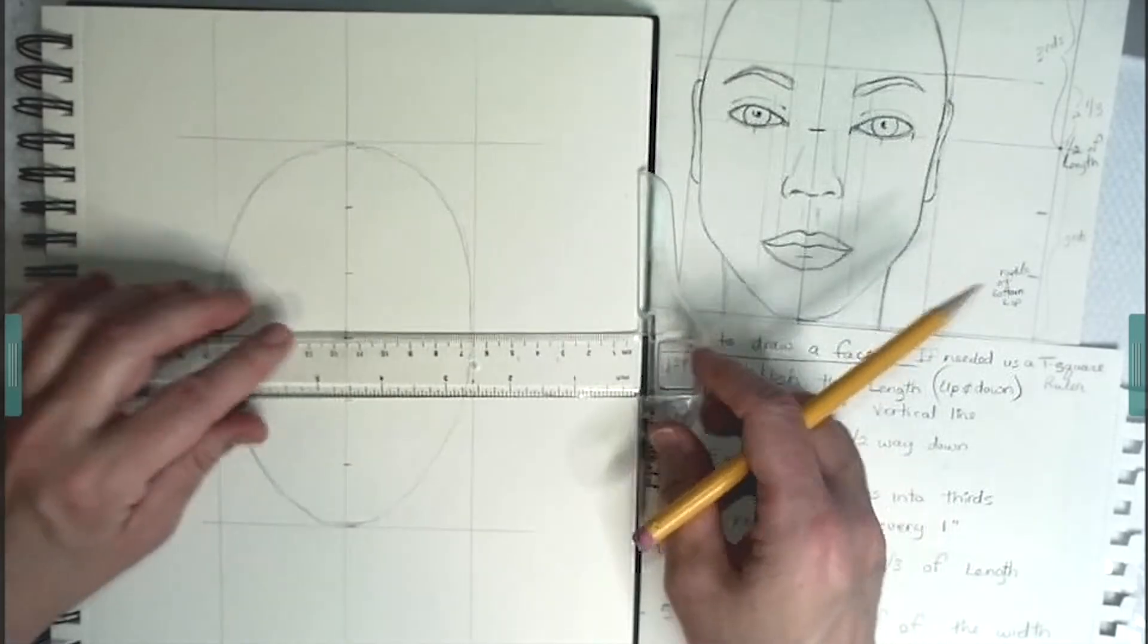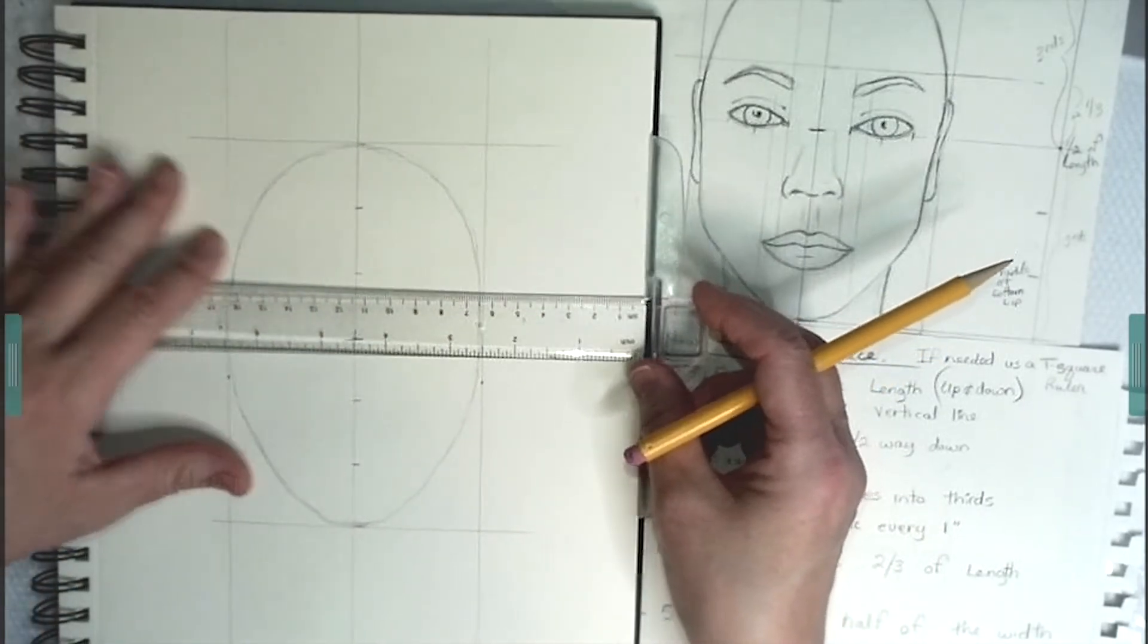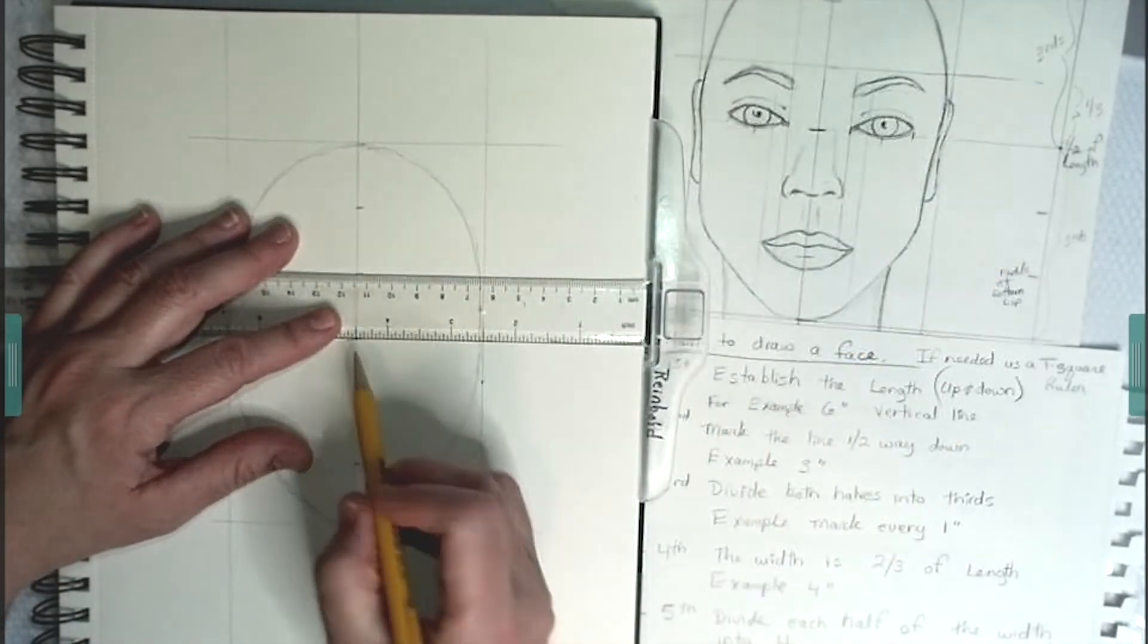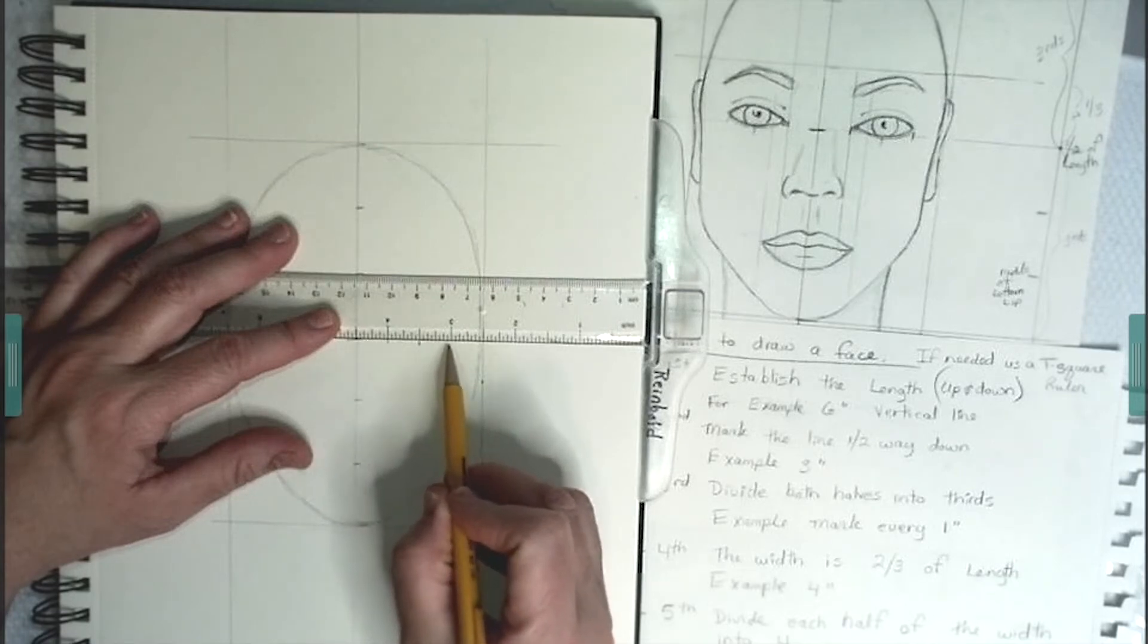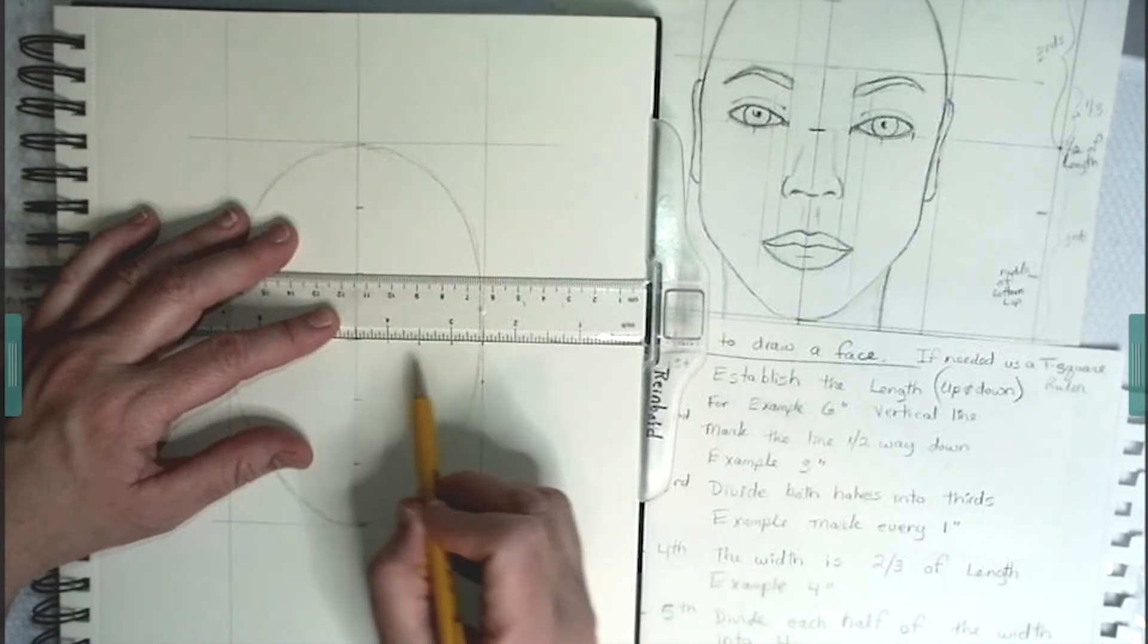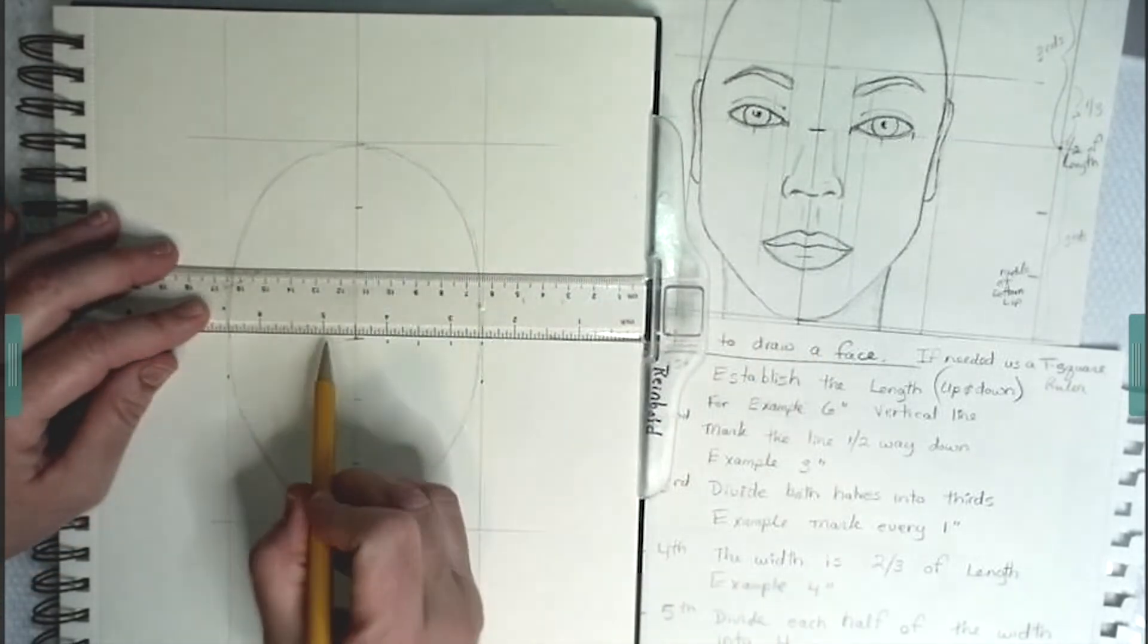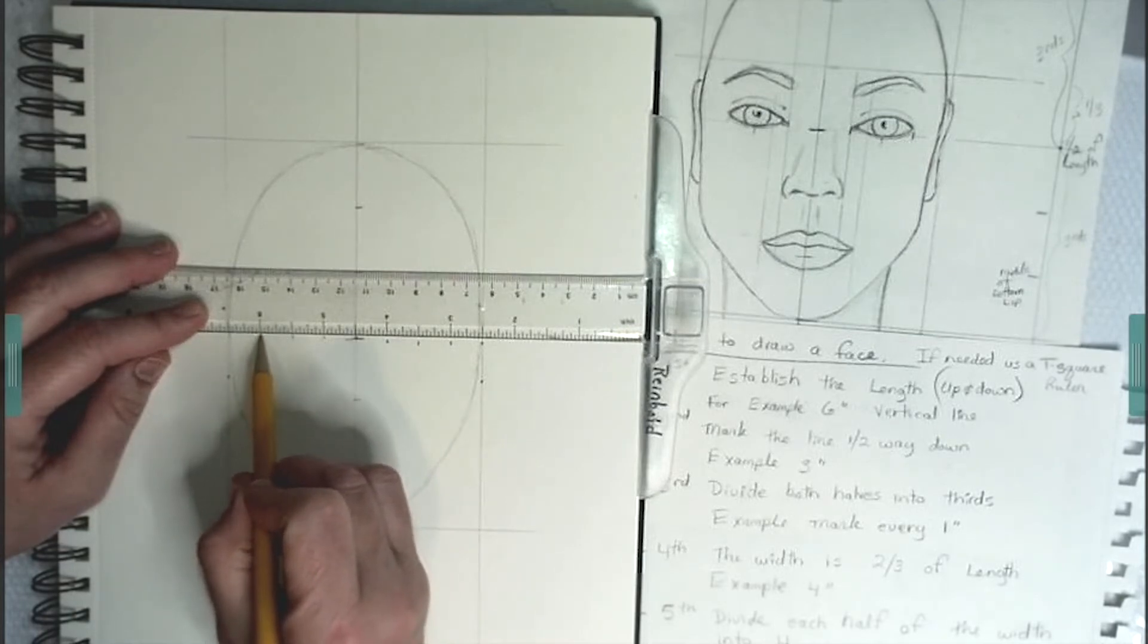Since our halves are two inches, that means we would have to divide it into half inches. And we'll have four even parts on both halves of the face horizontally. Make these marks nice and light because you will be erasing them at the end.